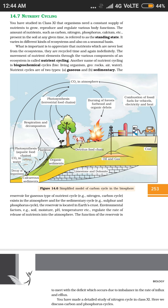Some terminology: whatever nutrients are present in the soil, the amount of that nutrient present in soil is called the standing state. For example, carbon, nitrogen, phosphorus, calcium, sodium — every such thing which is present in the soil, the amount of that material is called its standing state.